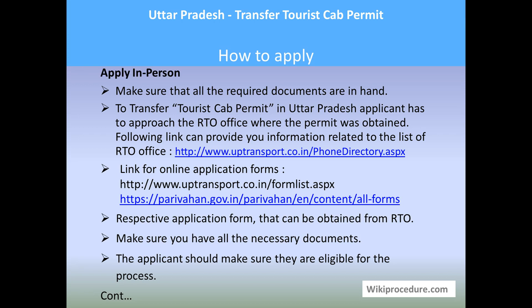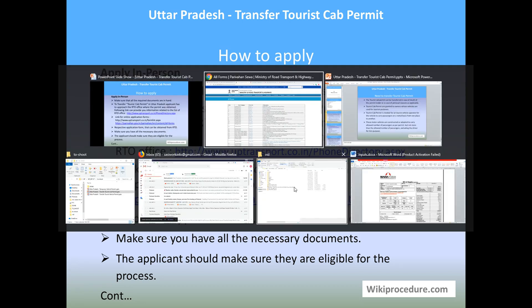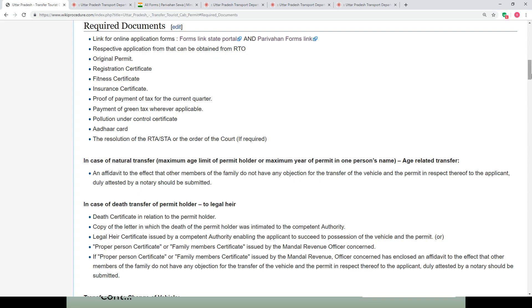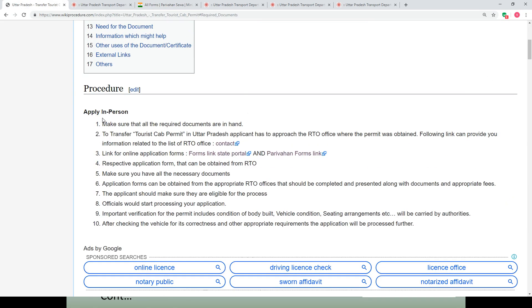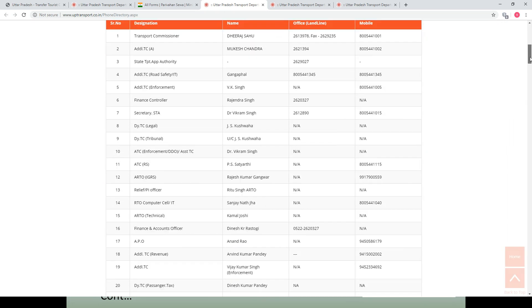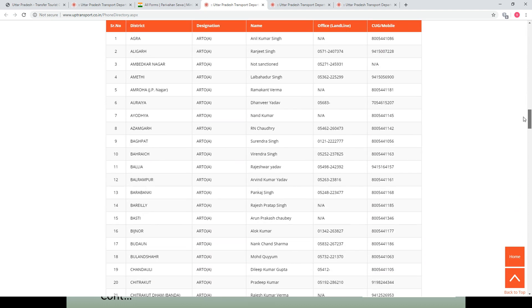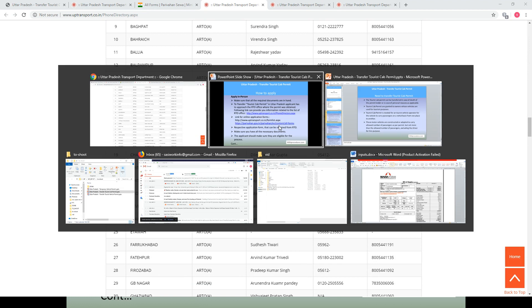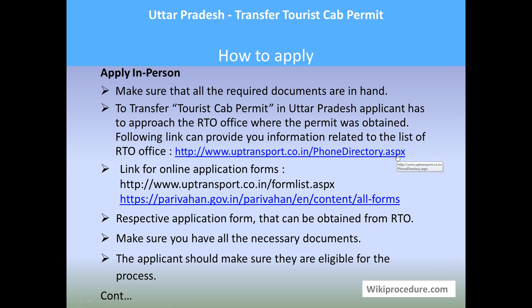To apply in person, make sure all required documents are in hand. To transfer a tourist cab permit in Uttar Pradesh, one has to go to the concerned RTO office for the area. In our wikiprocedure page under the procedure section, we have provided a contact link which will help you reach the telephone directory page of the Uttar Pradesh Transport Department, where you can find the appropriate number for your location. You can also download the application form using the two links provided, or obtain it directly from the RTO office.